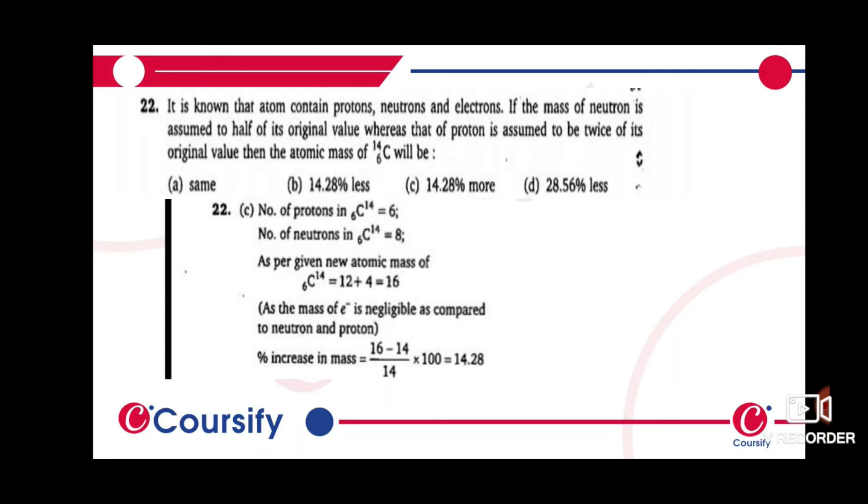As the mass of electron is negligible as compared to both neutron and proton, the percentage increase in mass would be (16 minus 14) divided by 14.